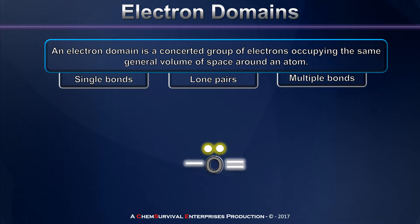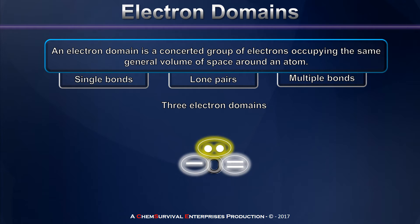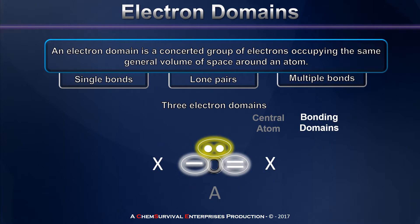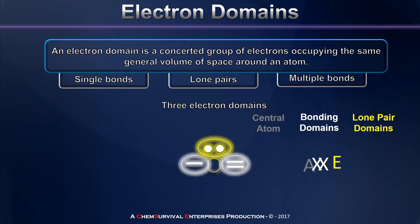So in this case, my central oxygen atom having a single bond, a double bond, and a lone pair of electrons would have three different electron domains around it. I'll be referring to electron domains using a simple system of nomenclature in which the central atom is A, any electron domains that involve bonding electrons are shown as X, and lone pair electron domains are shown using E. Using this notation, the central atom of ozone would be referred to as an AX2E1 compound.